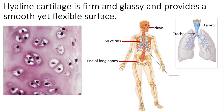Hyaline cartilage sits on the top of all of the long bones of the body. It also composes the nose and the trachea — within the wall of the trachea you have hyaline cartilage rings. Also, the costal cartilage, which connects the ribs to the sternum. Overall, hyaline cartilage is flexible, smooth, and provides a nice surface around which bones can articulate.